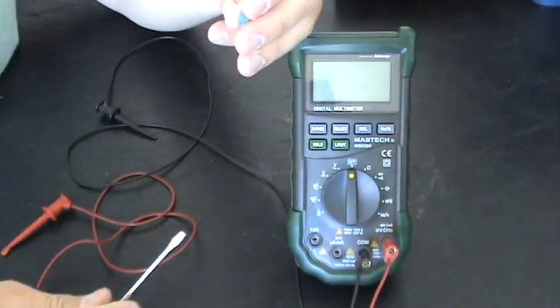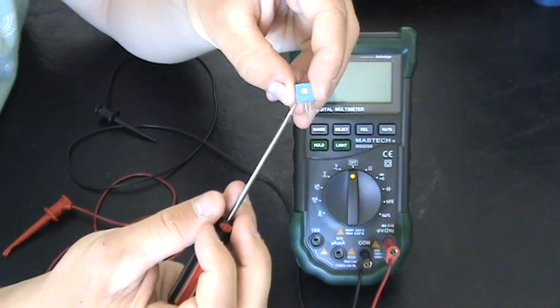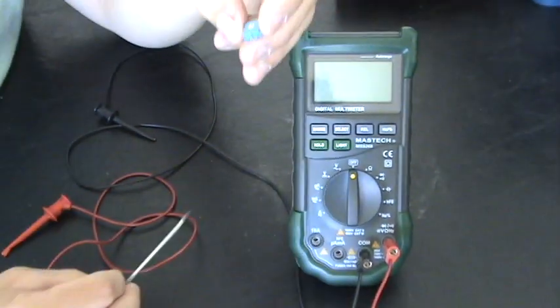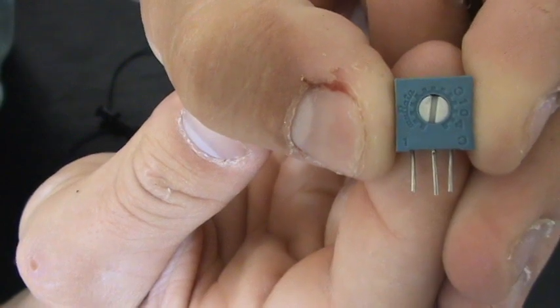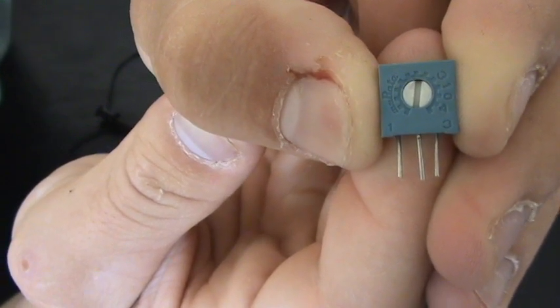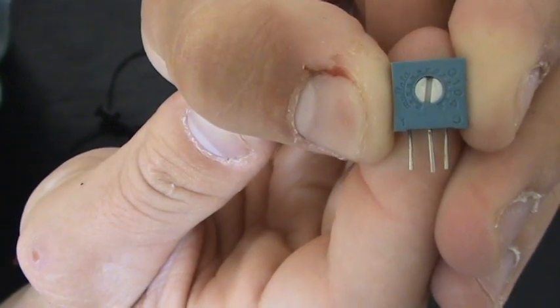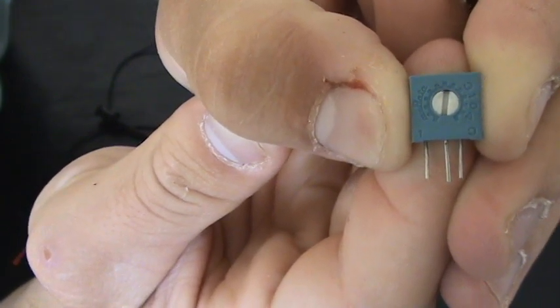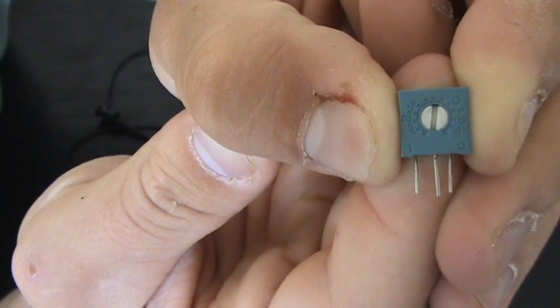And this is because the first and the third lead, maybe it's better if I zoom in. The first and the third lead, you can see they're number one and three. When you hook up your wires to that, that's going to give you a fixed resistance or the max resistance of your potentiometer.